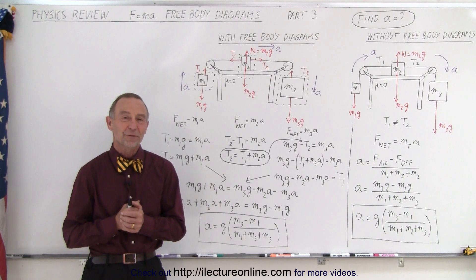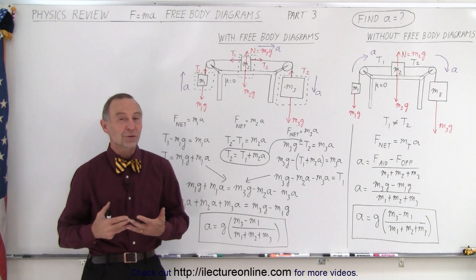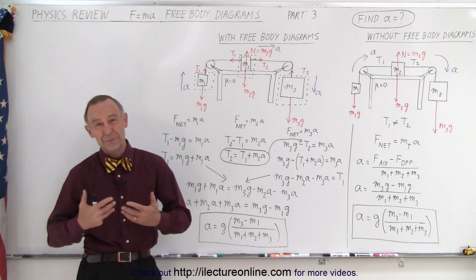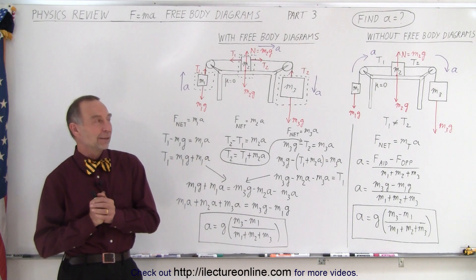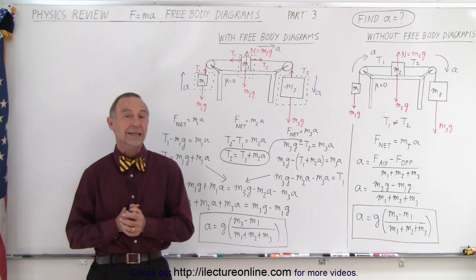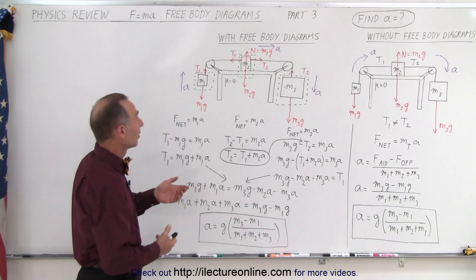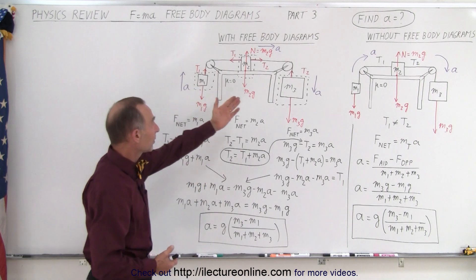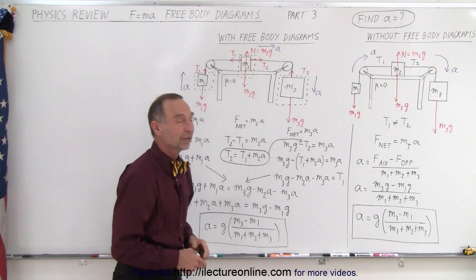Welcome to my lecture online. For our third example of how to use free body diagrams to solve an F equals MA type of problem, we picked something a little bit more complicated. Here we have three masses. We have one hanging on one side, another one hanging on the other side, and the third one on the table.